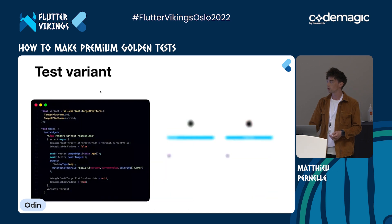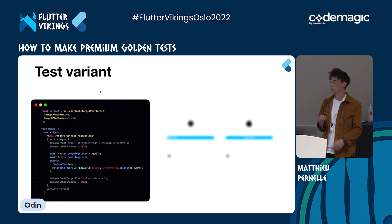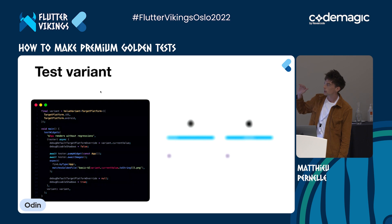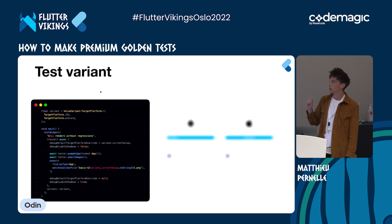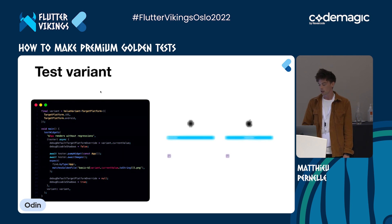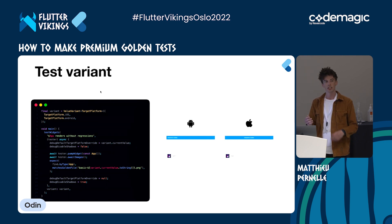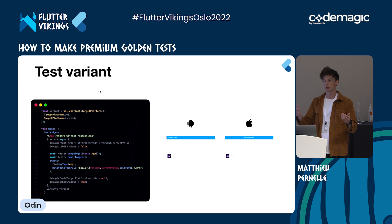We do not want to write a test for each device, so the trick is to use test variants. Here we are defining two test variants — target platform iOS and Android — and the test will be executed for each variant. So it generates two images, and in each one of them we can see the specificities of the test variant, like the position of the title in the app bar.